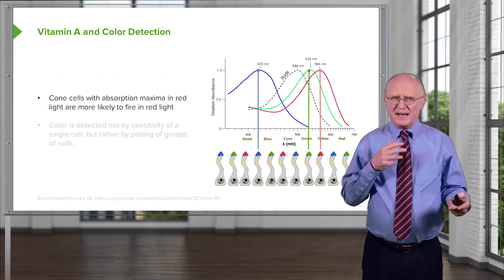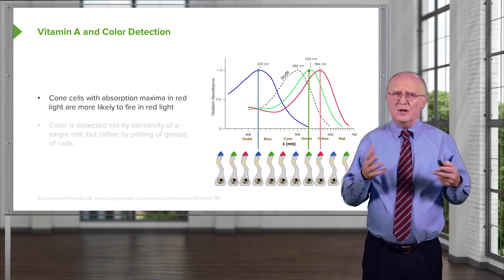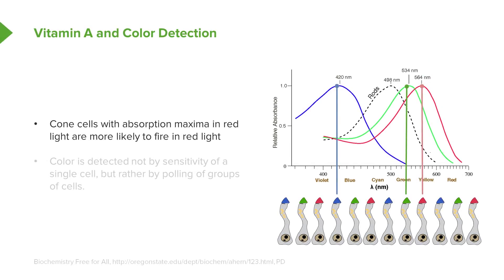Cone cells that have maxima in the red region are more likely to fire if they get red light, whereas those with maxima in the green fire when they get green light, and those in the blue when they get blue light. Color is detected by the cone cells and by the brain, not by the sensitivity of any individual cell, but rather by a polling of groups of cells. A group of blue cone cells in one cluster that all send a signal to the brain about blue color confirms the detection, and the brain then paints the image we see as a result of these actions of individual cells.